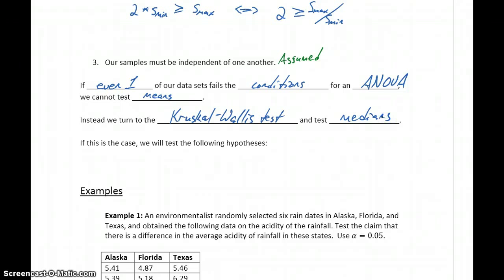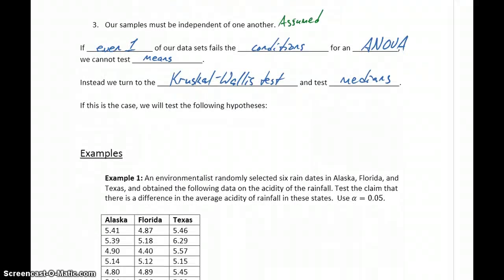The Kruskal-Wallis test is similar to the ANOVA, in the sense that it's testing multiple population parameters at the same time. In this case, what we'll be testing is the null hypothesis that the first median is equal to the second median, is equal to the third median, and then on for however many different samples we have, versus the alternative hypothesis that at least one median is different.